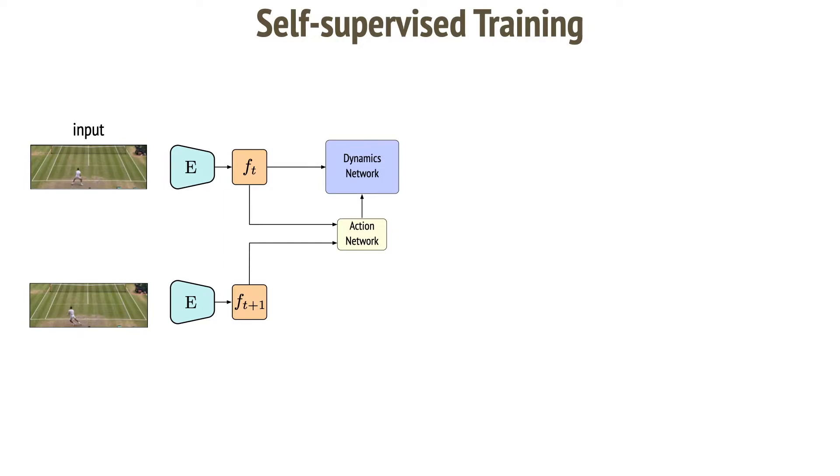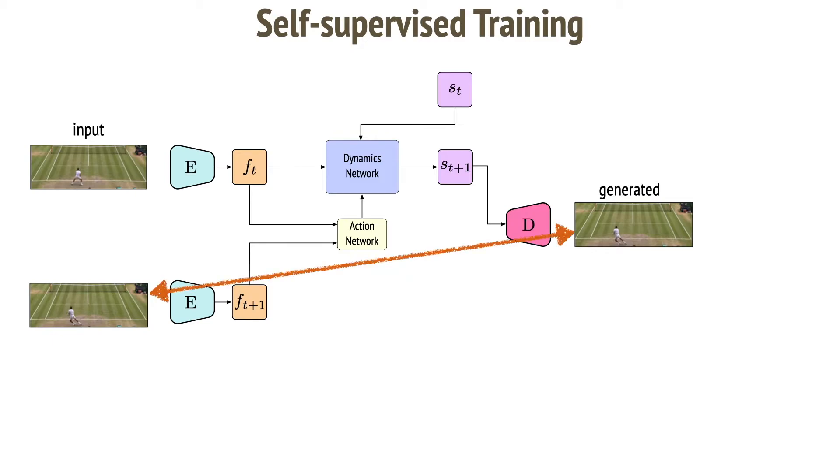Hence, an updated feature embedding can be generated by the Dynamics model, implemented here as a recurrent neural network with a previous state. We then can generate the next frame using the new state of the Dynamics network. Here we see the first opportunity for self supervision. We found pure image space supervision insufficient here.